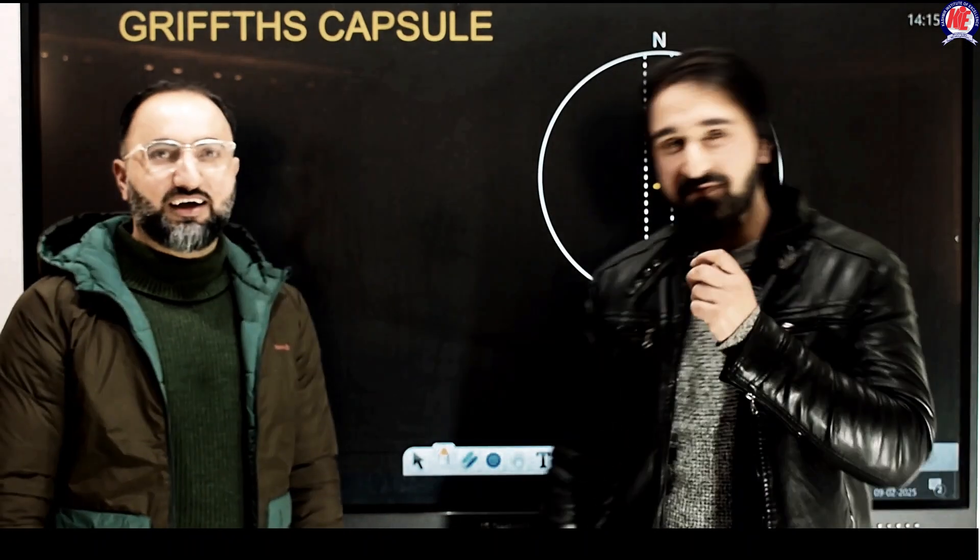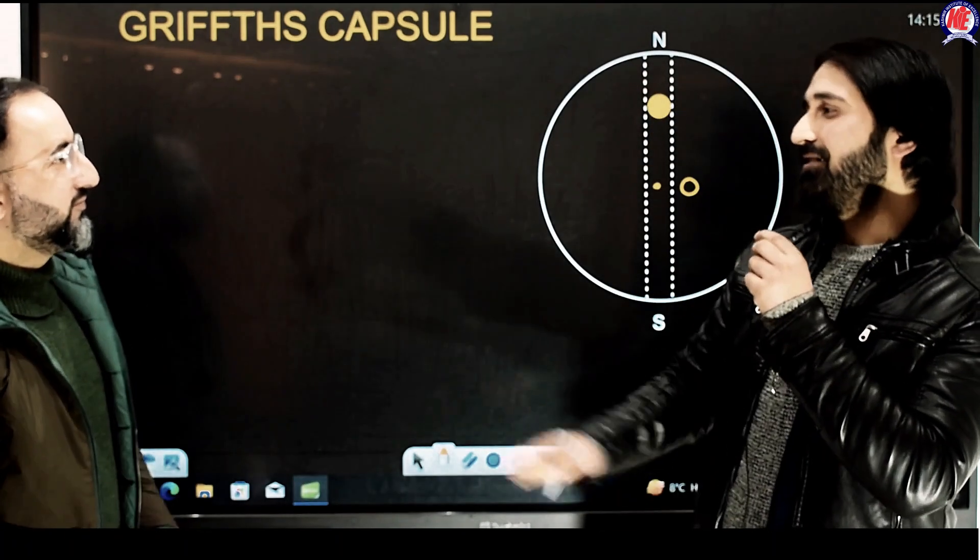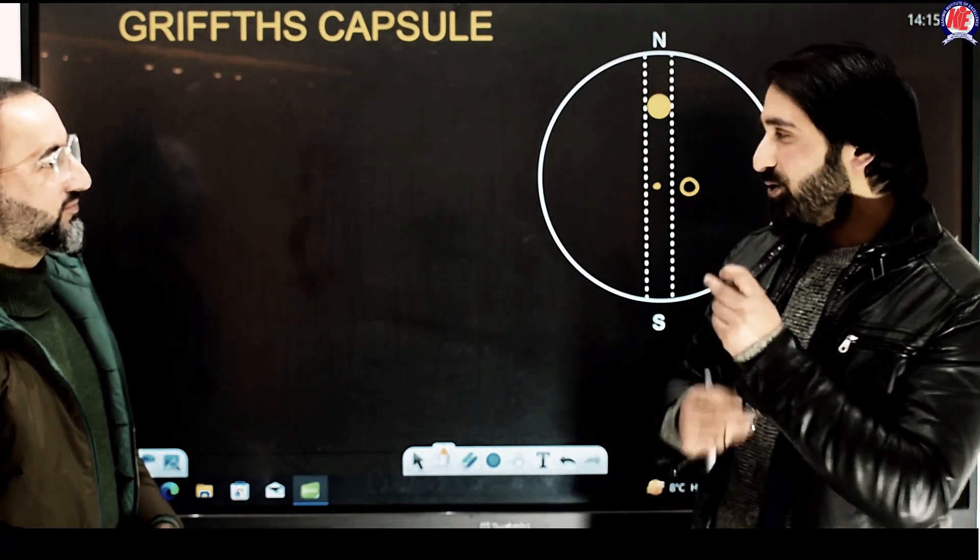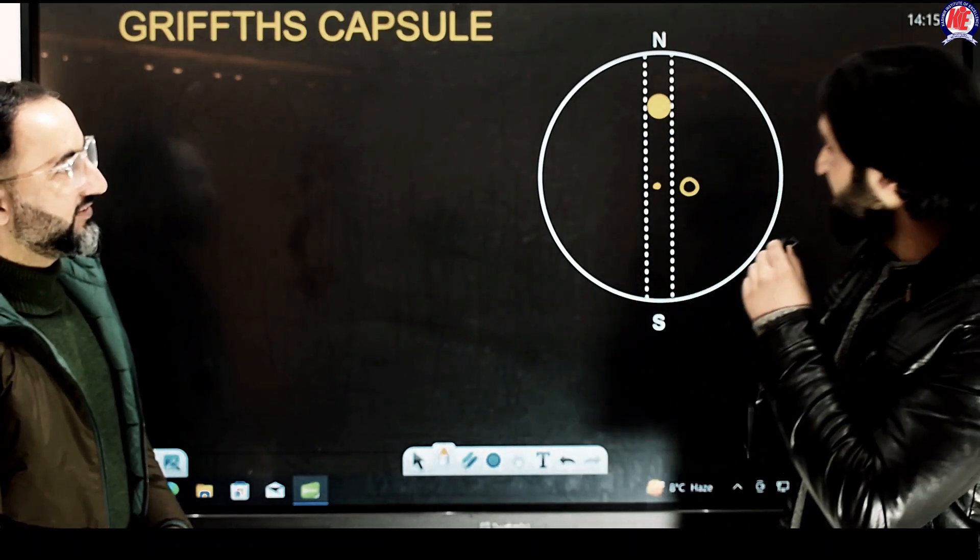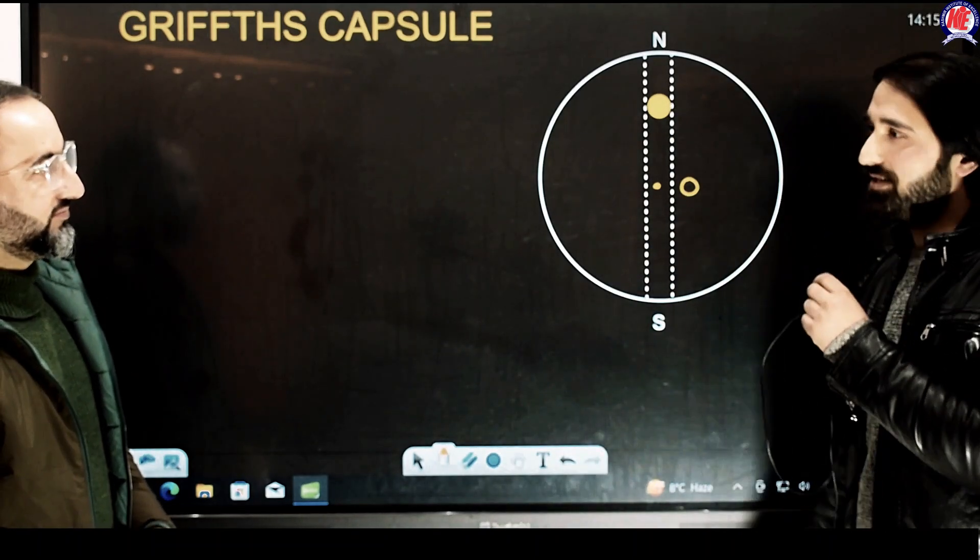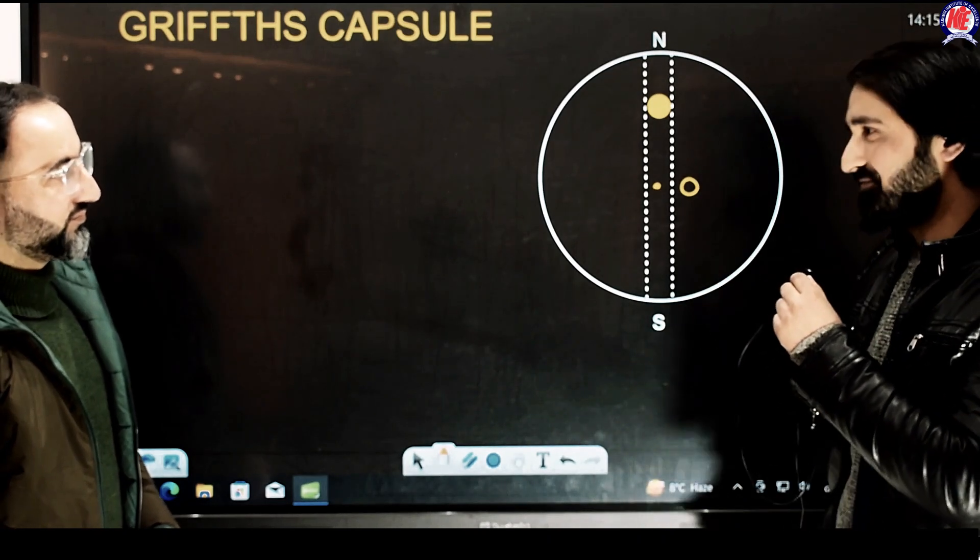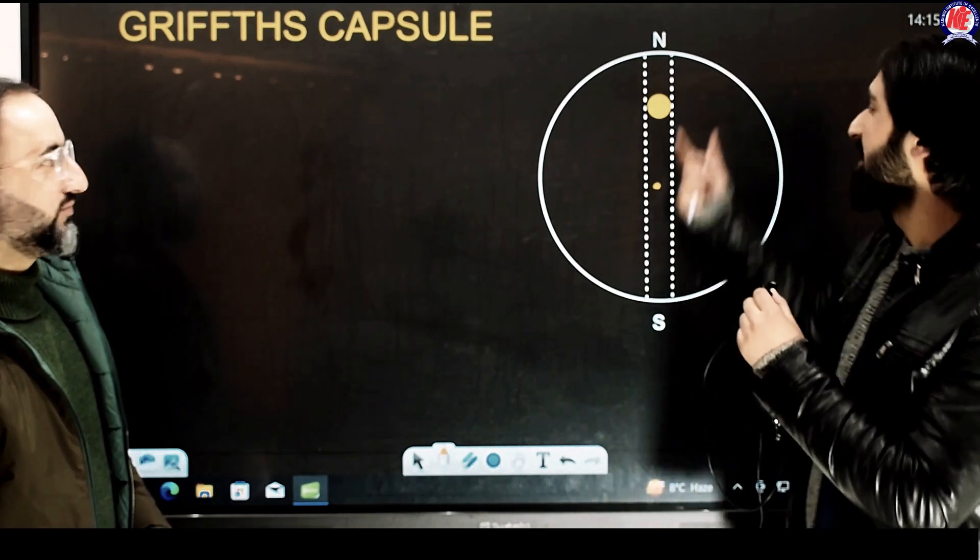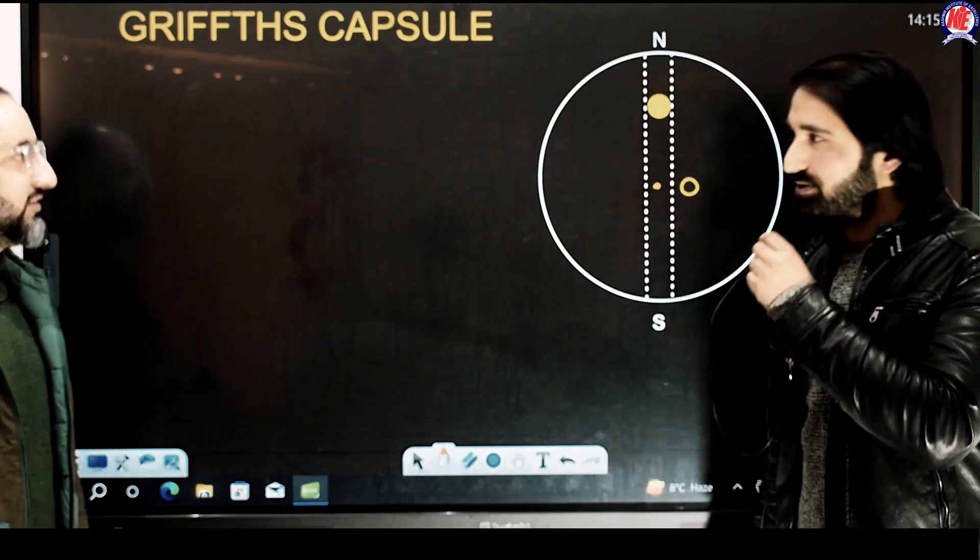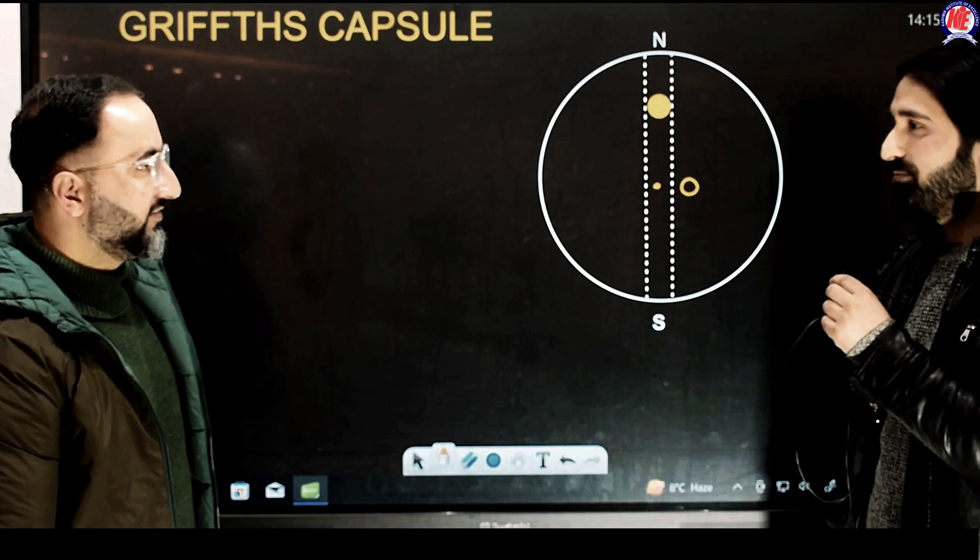Sir, this Griffith's Capsule, we often come across it during our Bachelors and even in class 11 and 12. So this question goes as such: if we have a huge sphere, say for example we have Earth, if somehow we manage to dig a tunnel through Earth, let's say through its diameter, diametrically opposite ends, and I happen to drop a solid ball of some mass m through the tunnel.